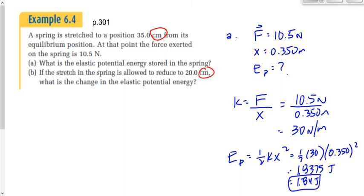Calculating that: 0.5 times 30 times 0.35 squared gives 1.8375, which we round to 1.84 joules. I'm writing down the unrounded number because there's a question B where I may need it. Don't forget to square that 0.35 — that's a common mistake.